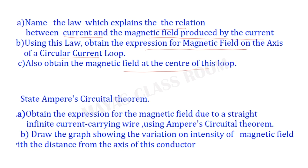State Ampere's circuit theorem. Obtain the expression for the magnetic field due to a straight infinite current-carrying wire using Ampere's circuit theorem. Then draw the graph showing the variation of intensity of magnetic field with the distance from the axis of the conductor.